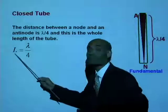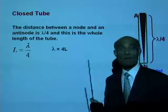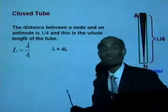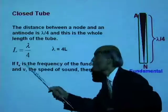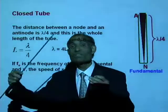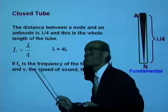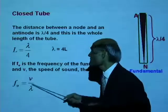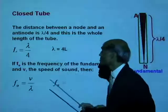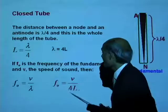Let F₀ be the frequency of the fundamental. Frequency equals wave speed divided by wavelength, so F₀ = V/λ, and since λ = 4L, the fundamental frequency of the air column in a closed tube is F₀ = V/(4L). This is a very important relation.